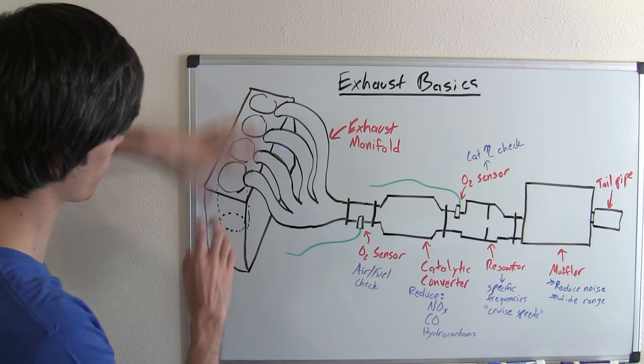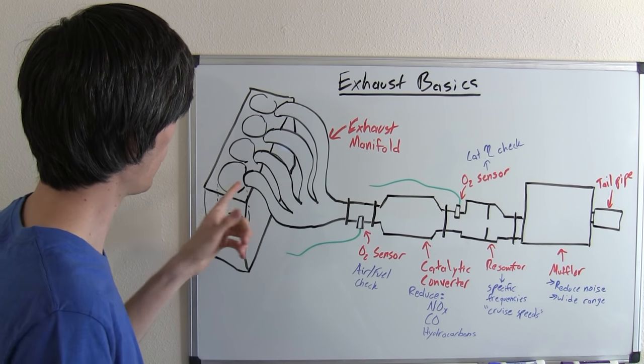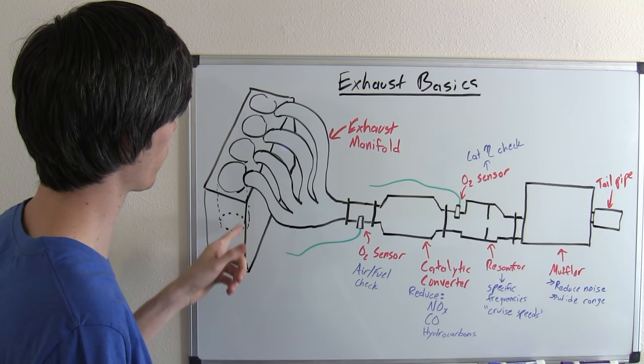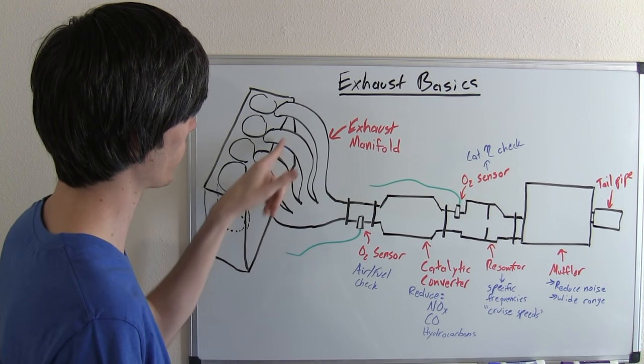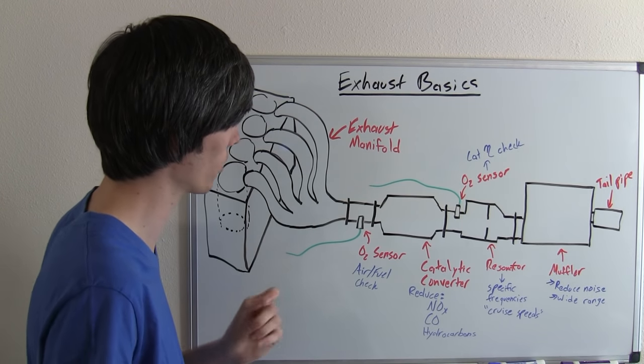What we've got here is your little engine block, a four-cylinder, and you've got your exhaust manifold. At the exhaust stroke, it's going to be pushing the gases through these different plenums here in this exhaust manifold.